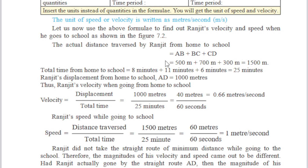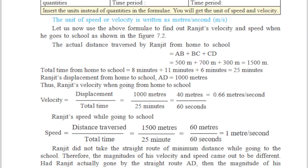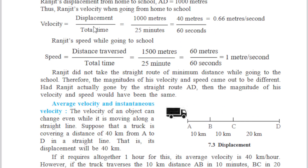The actual distance traversed by Ranjit from home to school is 1500 meters. Total time taken from home to school: 8 minutes plus 11 minutes plus 6 minutes equals 25 minutes. That is 500 meters for 8 minutes, 700 meters for 11 minutes, and 300 meters for 6 minutes. Ranjit's displacement from home to school AD is equal to 1000 meters. Velocity equals displacement upon total time: 1000 meters divided by 25 minutes, giving 0.66 meters per second.